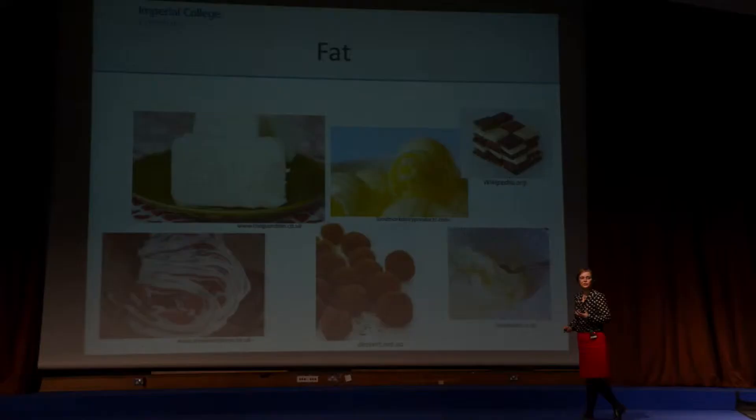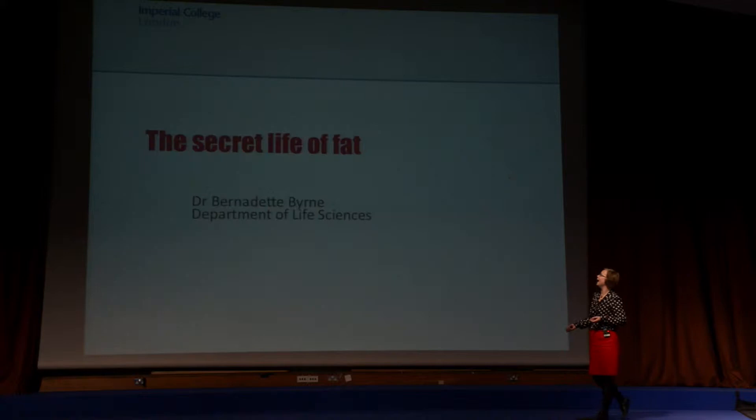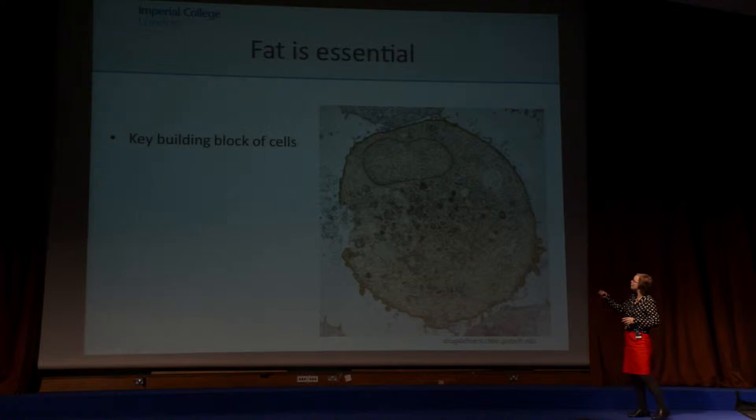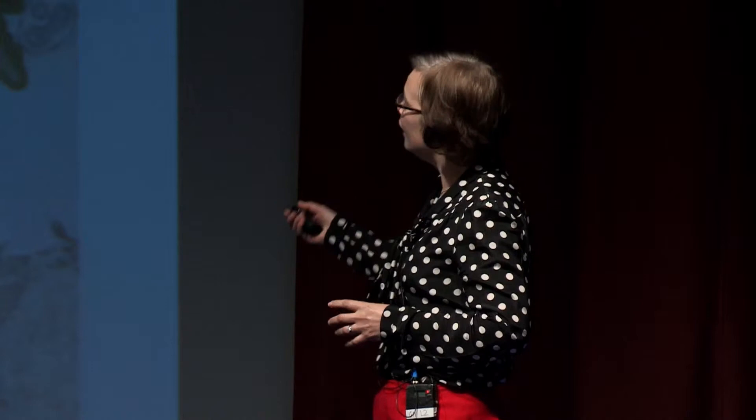I'm not going to be able to change any of those things for you, but I am going to tell you a little bit more about the key roles that fat has in our body. Fat is responsible for a huge number of intricate cellular functions, and I'm going to focus on one of those today. Fat is a key building block of all the cells in our body — it forms this membrane or barrier around the cellular contents.